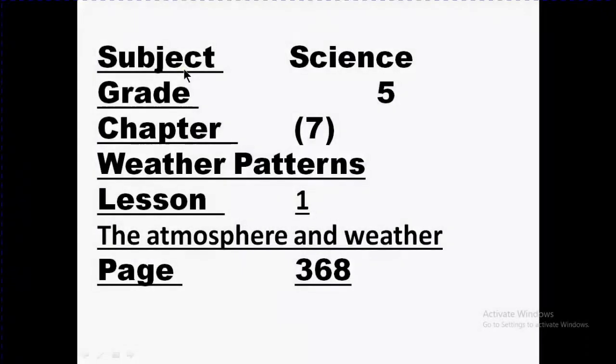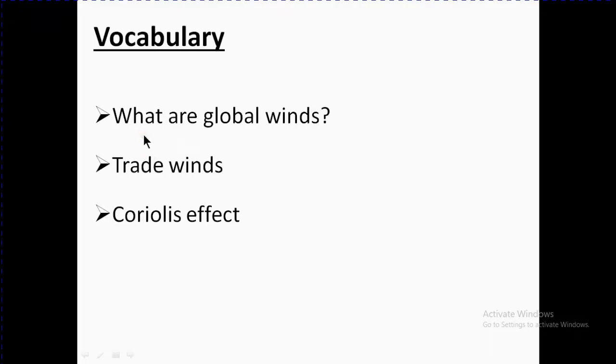Bismillah rahman rahim, assalamu alaikum. Subject: Science, Grade 5, Chapter 7: Weather Patterns, Lesson 1: The Atmosphere and Weather, page 368. Vocabulary: What are global winds? Trade winds, Coriolis effect. Let's see one by one all of them.